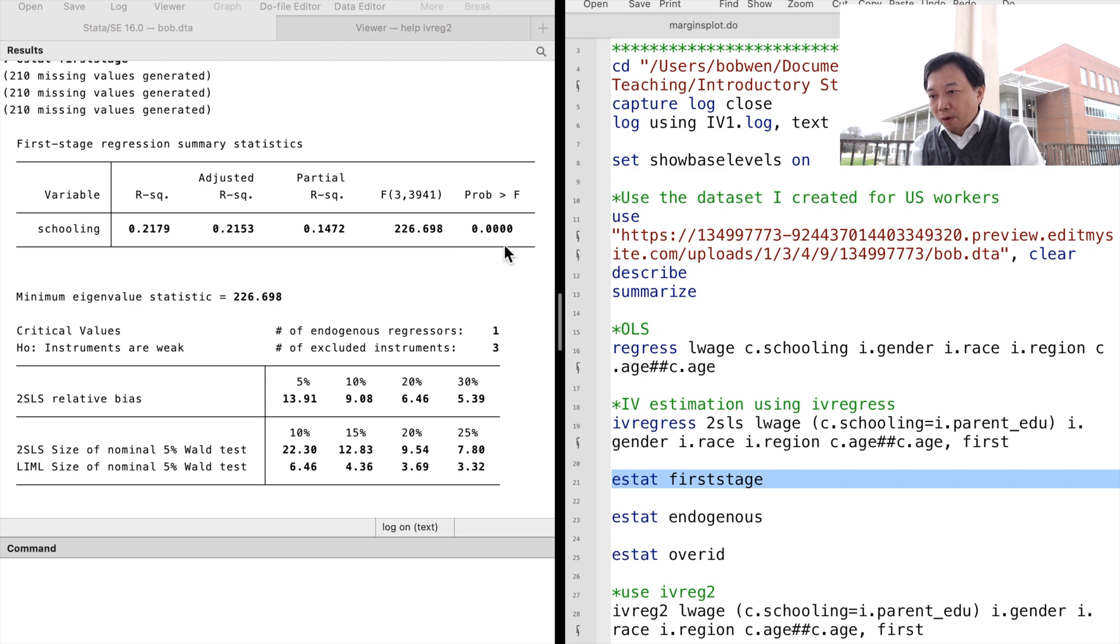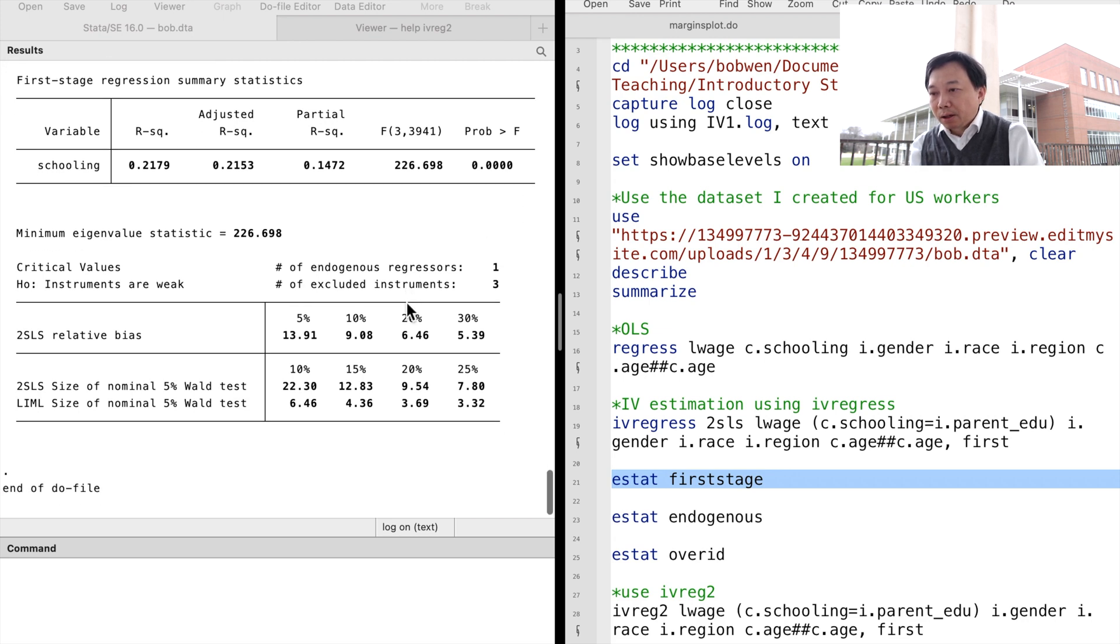The F statistic tells us whether the coefficients of the instruments in the first stage are significant. We compare the eigenvalue statistic with the critical values and conclude that the parent's education is not a weak instrument for their children's education.